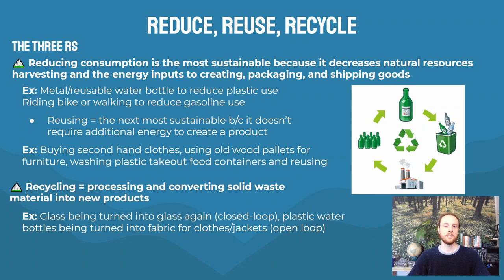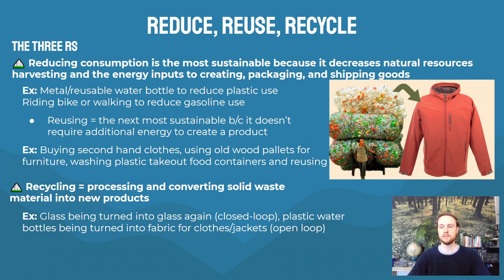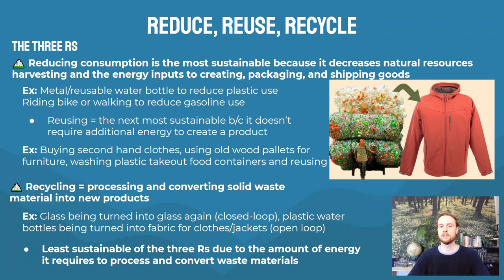Examples of recycling include turning glass back into glass — called closed loop — because the initial waste product becomes glass again. Open loop is where waste, such as plastic water bottles, is turned into a new product like a synthetic fiber jacket. Recycling is the third R because it still requires considerable electricity input, other raw materials may be needed, and it needs to be shipped, processed, sorted, and packaged. It is better than throwing something away, but it should be your last resort.